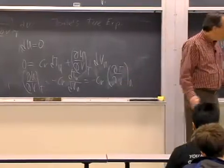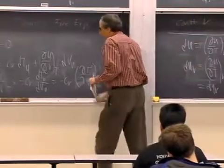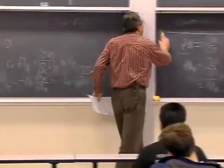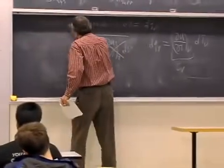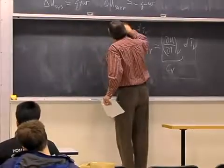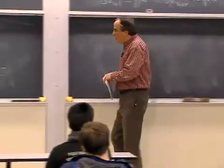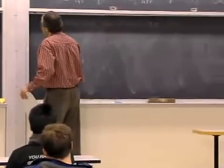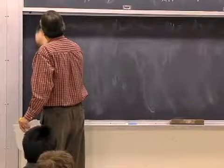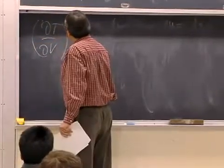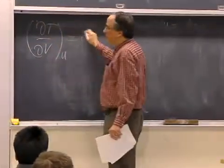So he made an incorrect conclusion. Because something was small and unmeasurable, he said, well, to the best of my knowledge, dt dv at constant u is equal to zero.